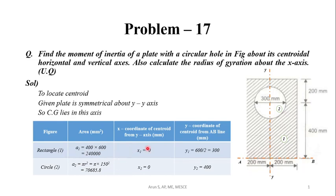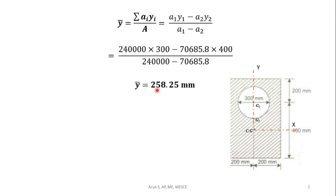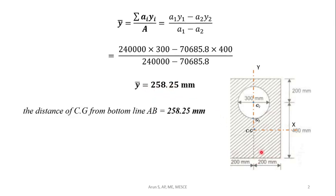We have now found the coordinates of the centroid of the rectangle and circle, and their areas. Applying the standard formula: y-bar = (A₁·y₁ − A₂·y₂) / (A₁ − A₂). After substituting values, we get y-bar = 258.25 mm. That is, the center of gravity is located at 258.25 mm from the baseline a-b.